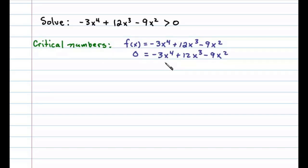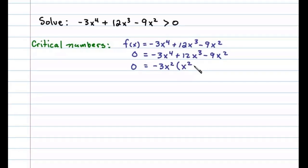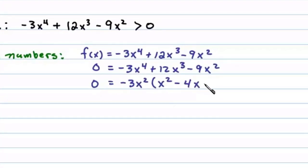In this case, we notice there's a GCF of 3x². We could solve this by factoring. Let's go ahead and factor out a negative 3x². Doing that, we'll be left with x² - 4x + 3. Factoring further, we have -3x² times...